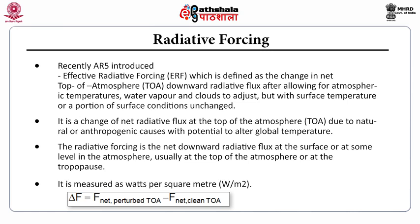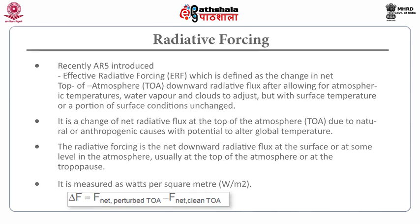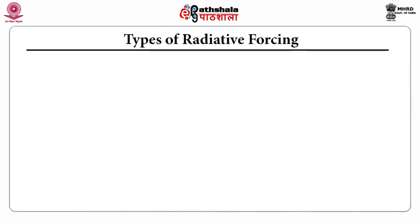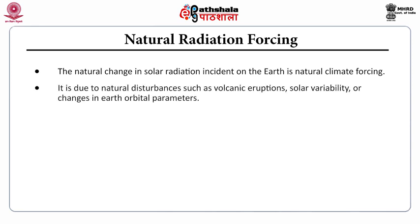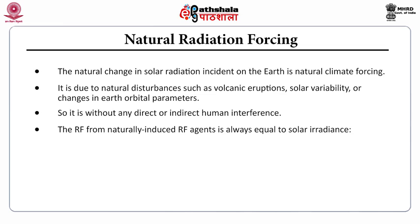Delta F is equal to F net perturb TOA minus F net CLI TOA. The radiative forcing can be of natural radiative forcing or anthropogenic radiative forcing. Natural radiative forcing refers to the natural change in solar radiation incident on the Earth. It is due to natural disturbances such as volcanic eruptions, solar variability, or changes in Earth's orbital parameters, without any direct or indirect human interference. The radiative forcing from naturally induced agents is always equal to solar irradiance.